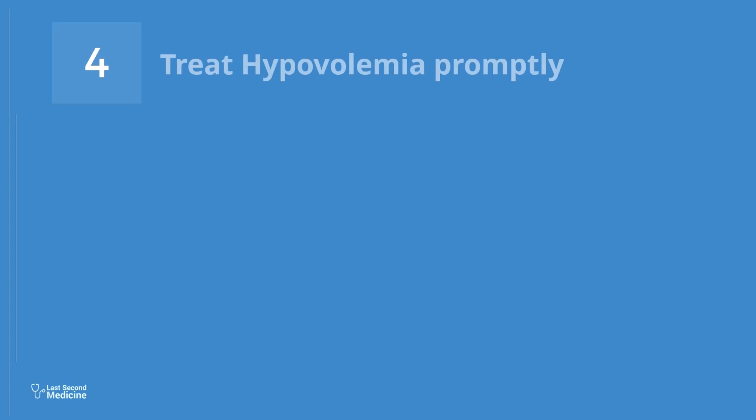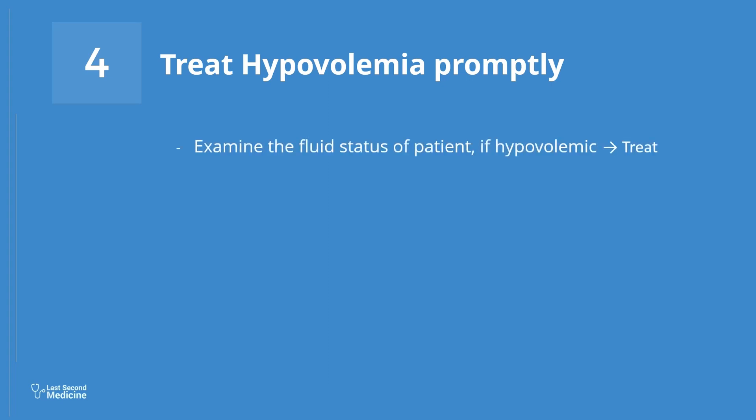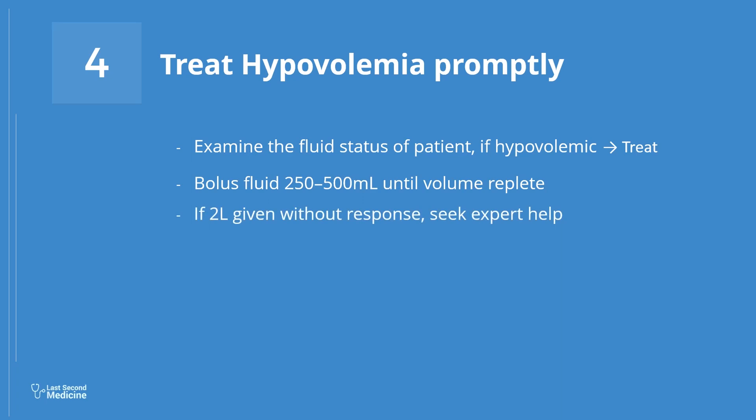Number 4: Treat Hypovolemia Promptly. Prerenal AKI is most commonly due to hypovolemia, and its correction can prevent progression of prerenal AKI to renal AKI, so treat it when you find it. Examine the fluid status of the patient by examining heart rate, blood pressure, JVP, capillary refill, and urine output. If there is hypovolemia, give 250 to 500 milliliters intravenous bolus fluid and repeat until volume is replete. If 2 liters of fluid is given without response, seek expert help from ICU.